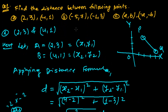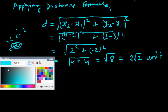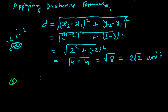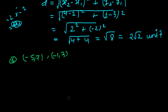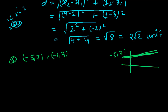Now the second one: distance between (-5, 7) and (-1, 3). I am directly applying the formula here without drawing a detailed figure. Suppose the two points are somewhere like this — both will be in a negative quadrant since the x-values are negative. So there are two points, and we have to find the distance between them.